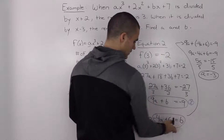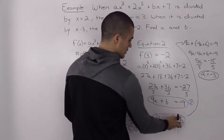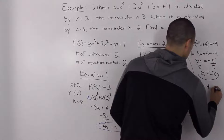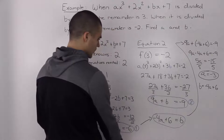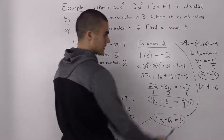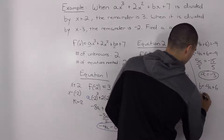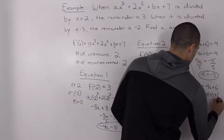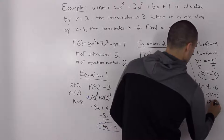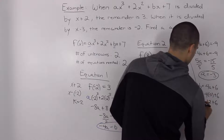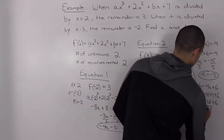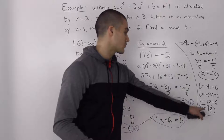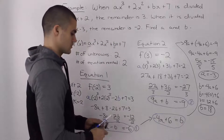Now I'll take this a value and plug it into the expression for b, which we know is b equals negative 4a plus 6. Plugging in negative 3 for a: negative 4 times negative 3 is 12, plus 6, so our b value is 18. Our final answers are a equals negative 3 and b equals 18.